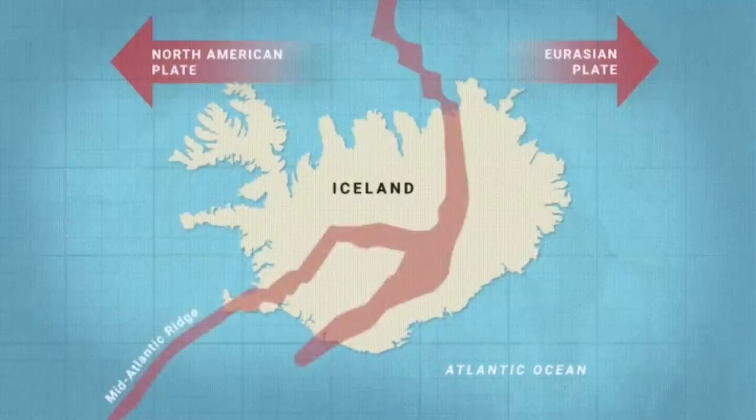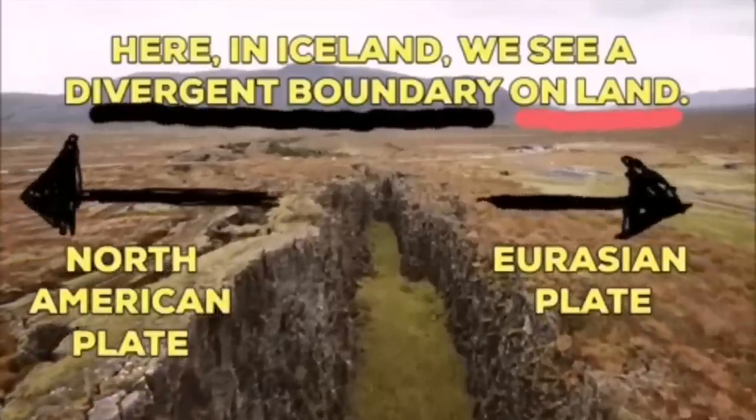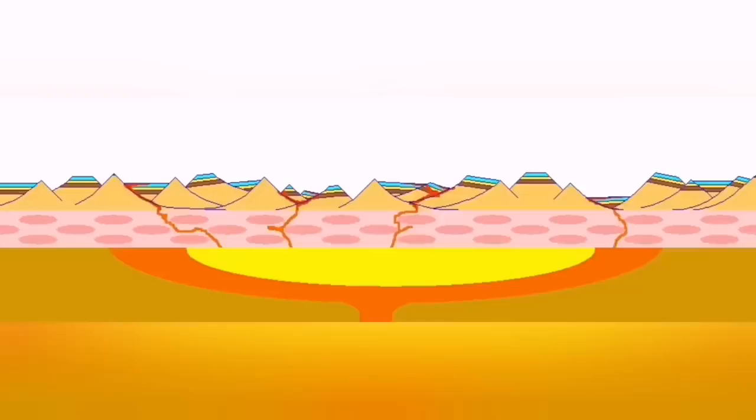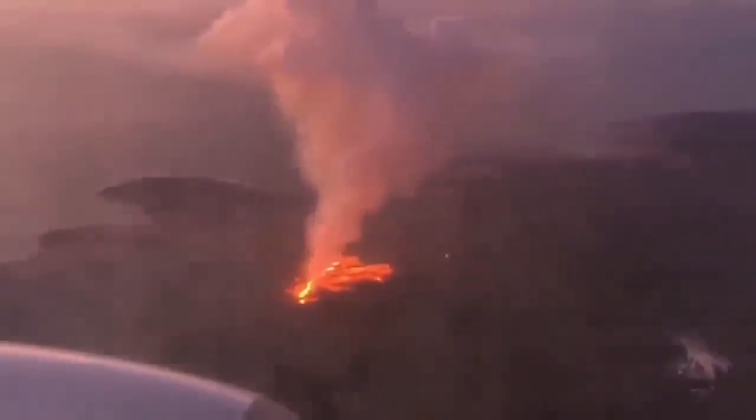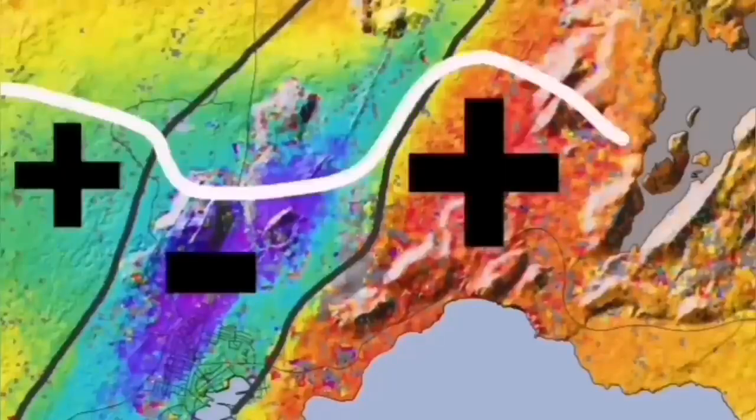Such a thing happens in Iceland, on the land we can see it. The Eurasian plate and North American plate, through these grabens, this is the hollow you see in the middle, are separating. Through them, the magma forms and rises and creates lava, eruption of the volcano, this is what we call it.